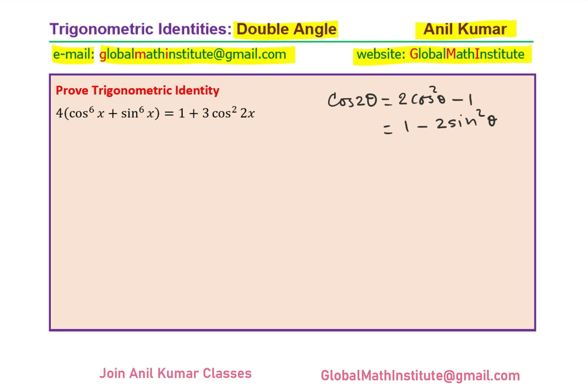Also, you see cos to the power of 6x plus sin to the power of 6x, that means we also need to look into A cube plus B cube formula. A cube plus B cube can be written as A plus B times A square minus AB plus B square.